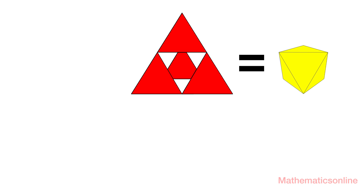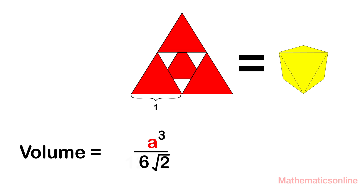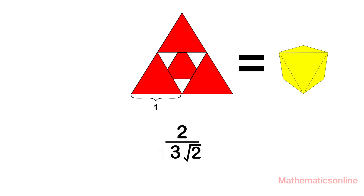Let's verify this using the formula for the volume of a tetrahedron. Since there are 4 tetrahedrons, we multiply the formula by 4. After simplifying, we get that the volume is 2 divided by 3 times the square root of 2.